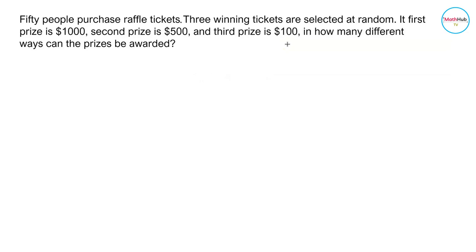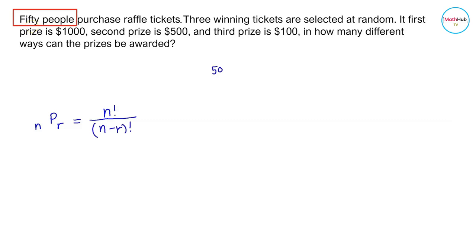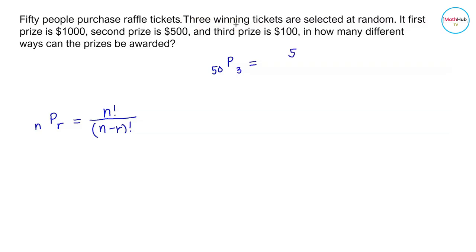Since the order is important, this is a problem on permutations. Using the permutation formula P(n, r) = n! / (n - r)!, with 50 people and 3 winning tickets, we have P(50, 3) = 50! / (50 - 3)! = 50! / 47!.